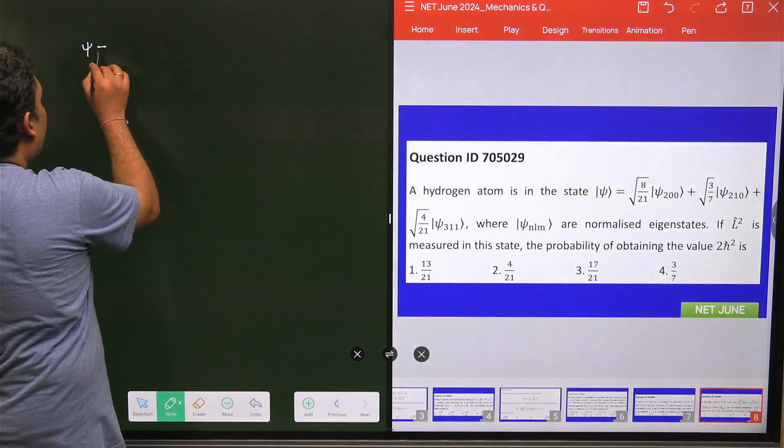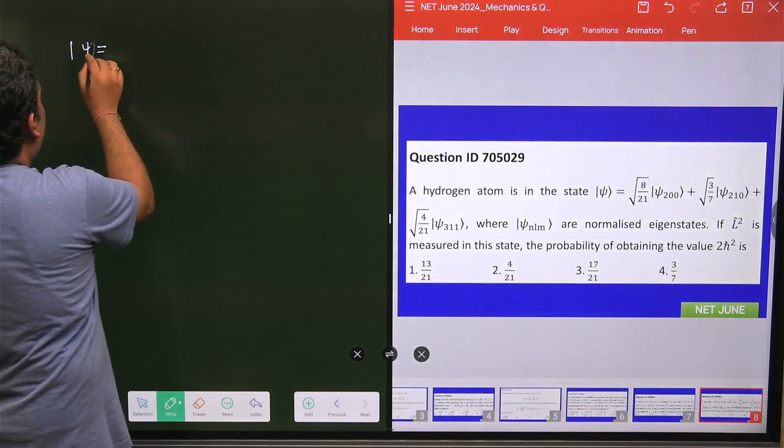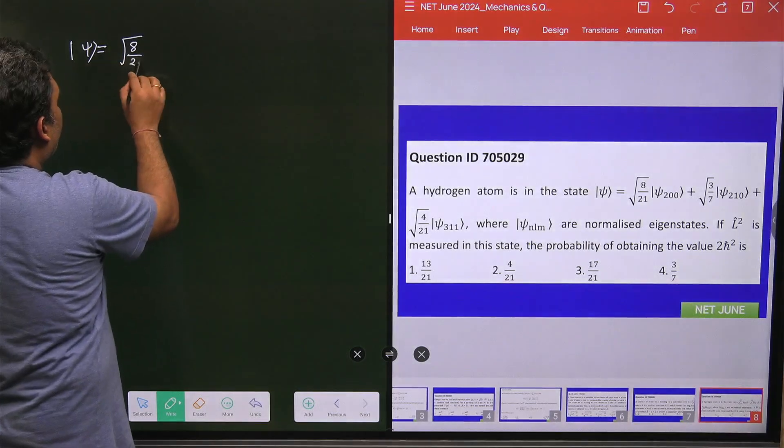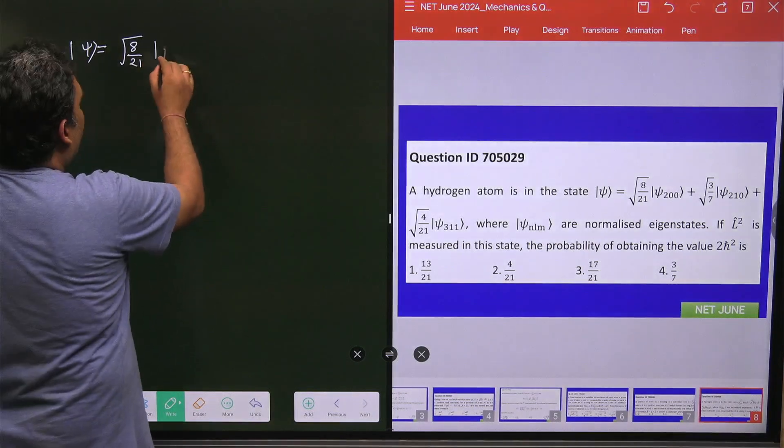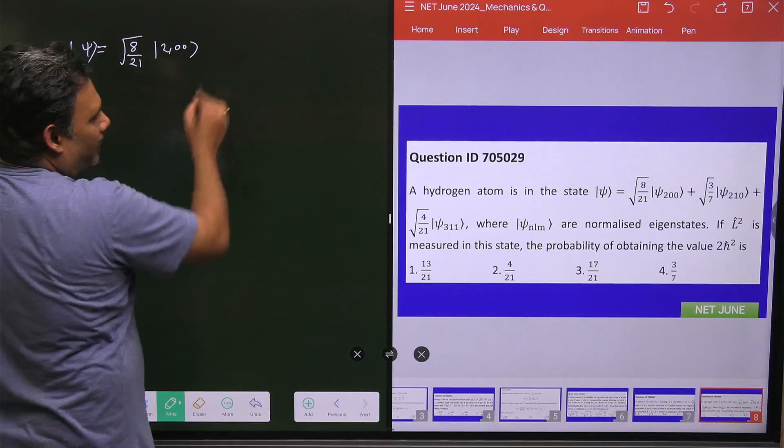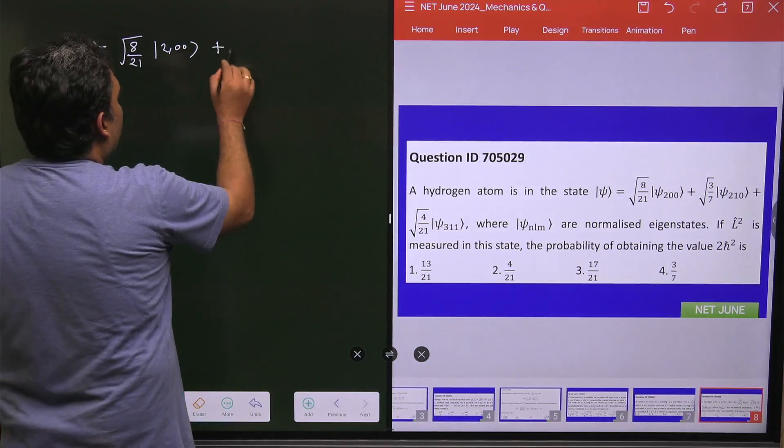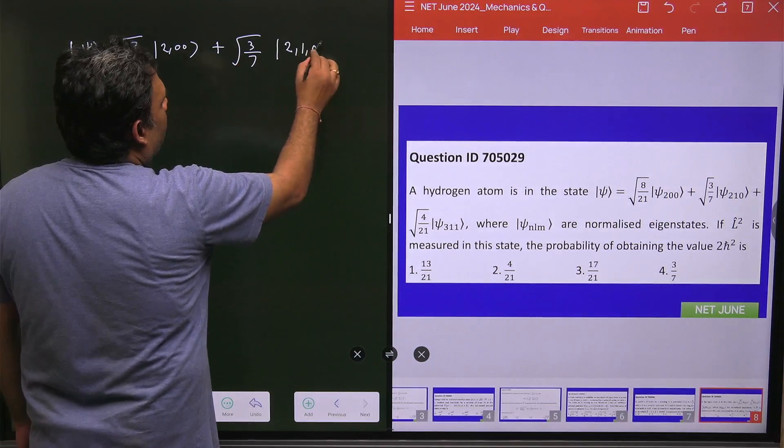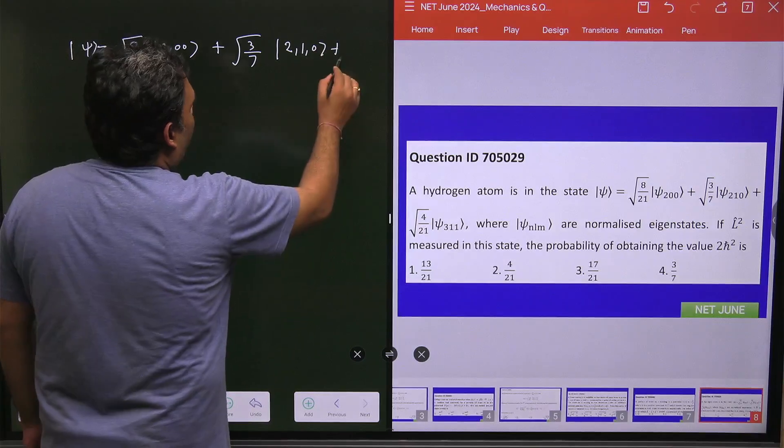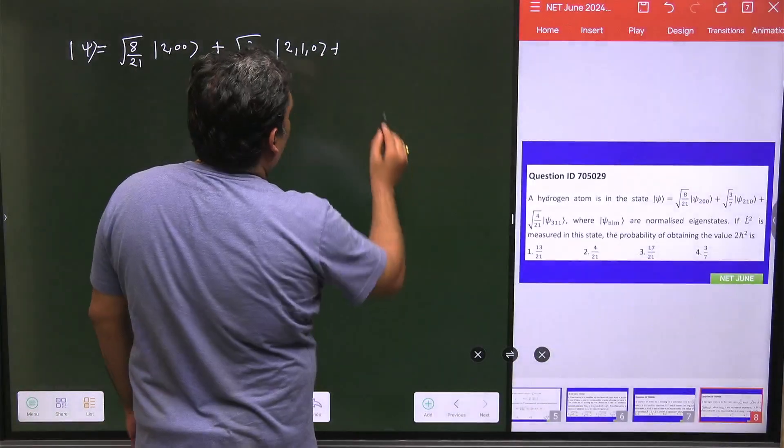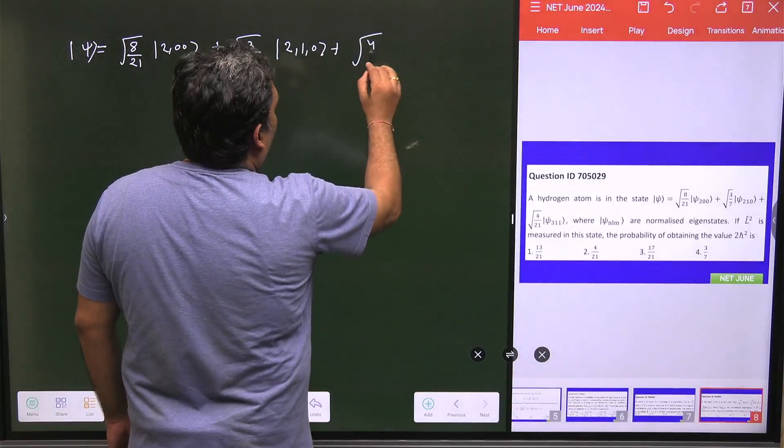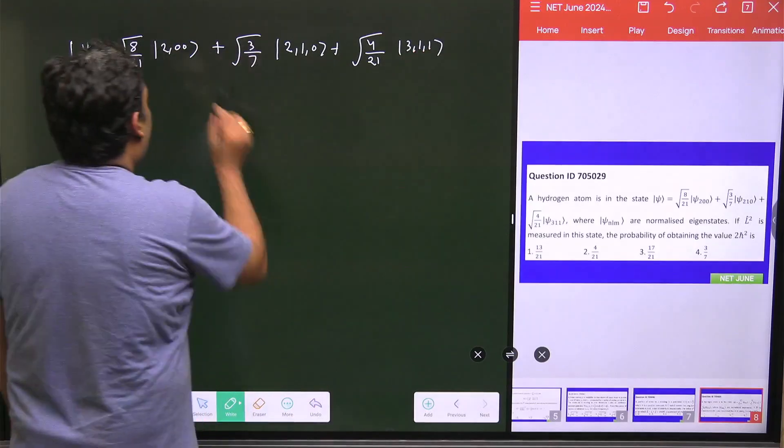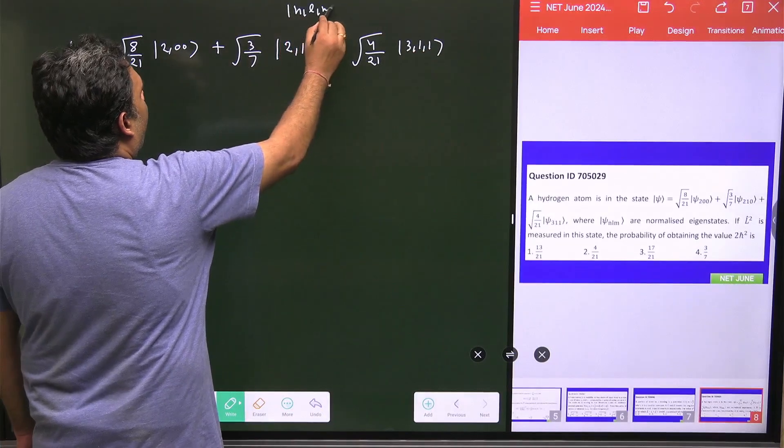So what is my ψ? If I will write my ψ, then my ψ is in a ket form. It is given that the coefficient is equal to √(8/21) and this value is |2,0,0⟩, I am just writing in this form, plus √(3/7) that will be |2,1,0⟩ plus we have √(4/21) that is |3,1,1⟩. And this is written in a basis of n, l, m.